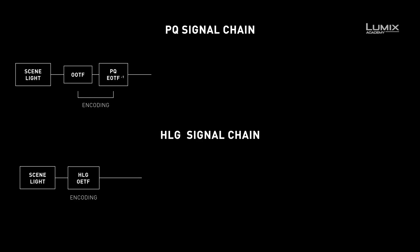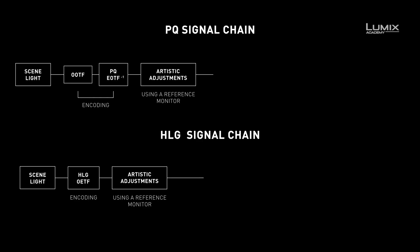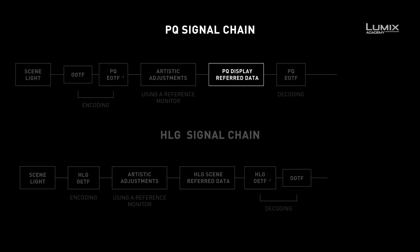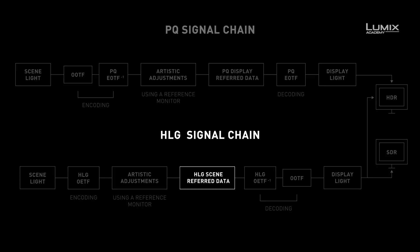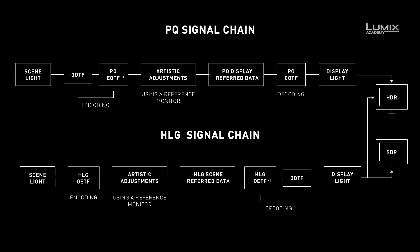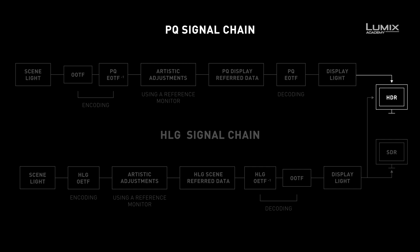What is the difference between PQ, perceptual quantizer, and HLG? PQ signals are absolute values and relate to absolute brightness. HLG is not aimed at any particular screen brightness and is not limited in any way — it is a relative brightness system. PQ also requires an HDR monitor, whereas HLG is compatible with both SDR, standard dynamic range, and HDR in 1000 nits.